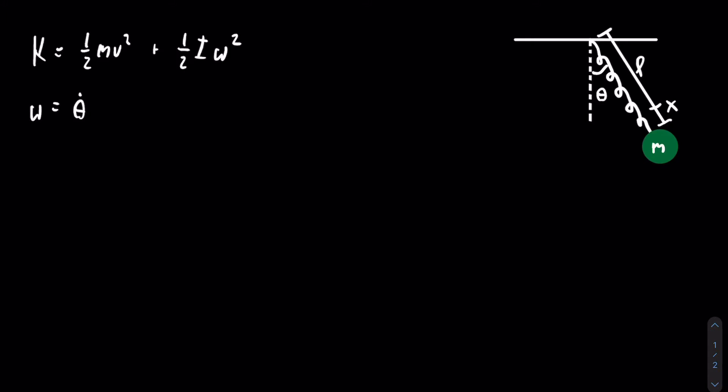I, or the moment of inertia for a single point mass as in this case, is equal to m r squared, where m is the mass and r is the distance to the point of rotation. So in this case, I is going to be equal to m times the quantity l plus x, squared.